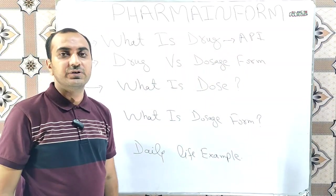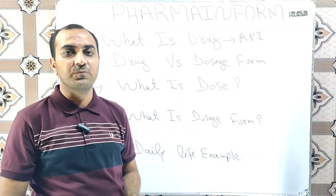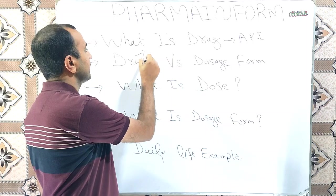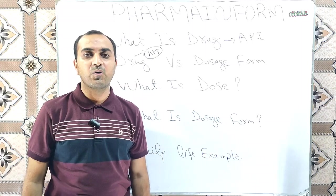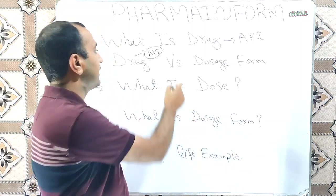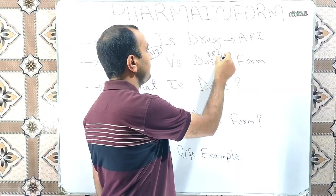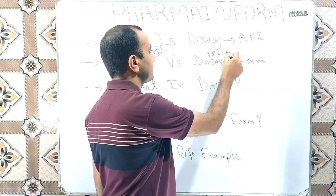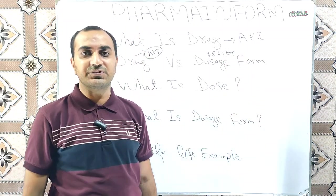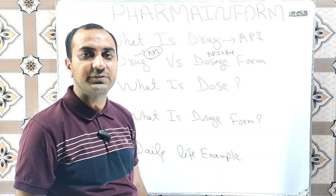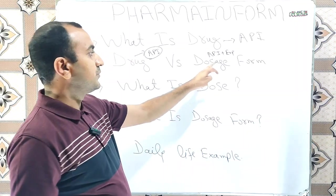What is the difference between drug and dosage form? As we discussed, drug is purely the active pharmaceutical ingredient. The dosage form is the combination of API plus excipients — that is, API plus inert ingredients is known as dosage form.